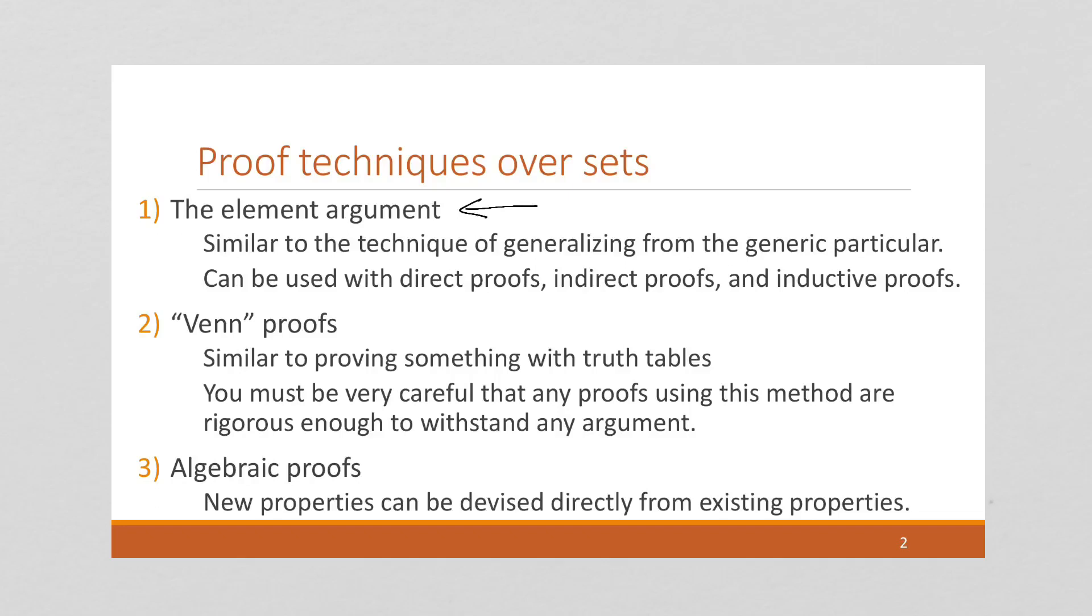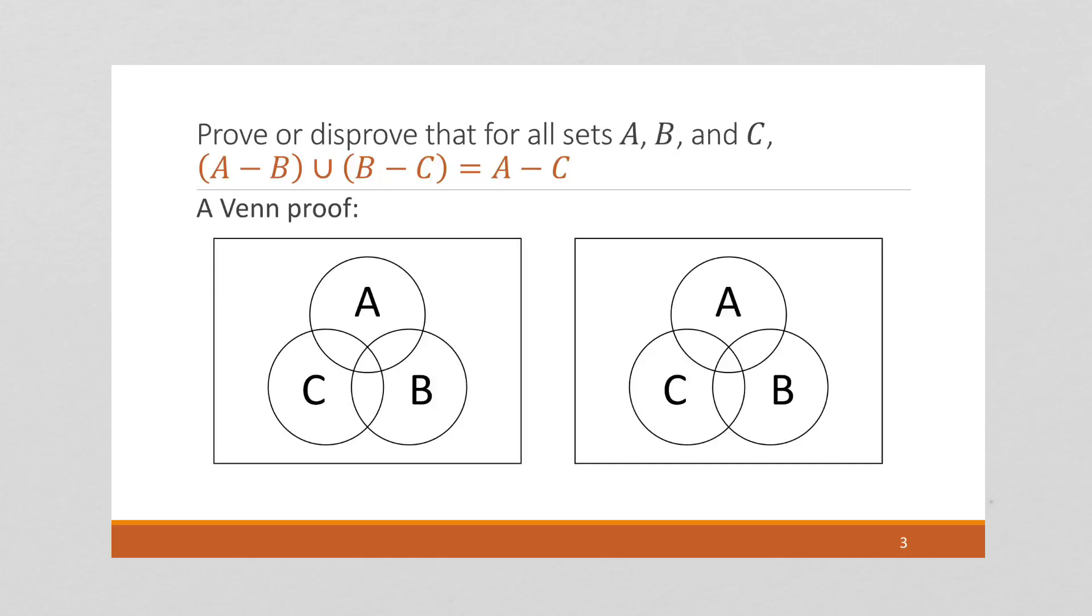In a previous video, we used the element argument to prove a set equality. We proved DeMorgan's Law, and to do that we chose a generic element from one of the sets and demonstrated that it was in the other set. For Venn proof, we're going to draw pictures to describe the sets. And then in a future video, we will do algebraic proofs over sets.